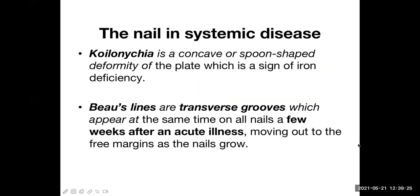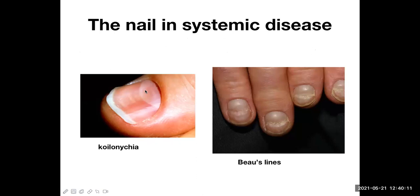In systemic diseases, the nail can be affected. Koilonychia — a spoon-shaped deformity of the nail — is seen in iron deficiency anemia. Beau's lines are transverse grooves that appear in all nails a few weeks after an acute illness and move out toward the free margin as the nails grow. These are the nail's reaction to acute illness.